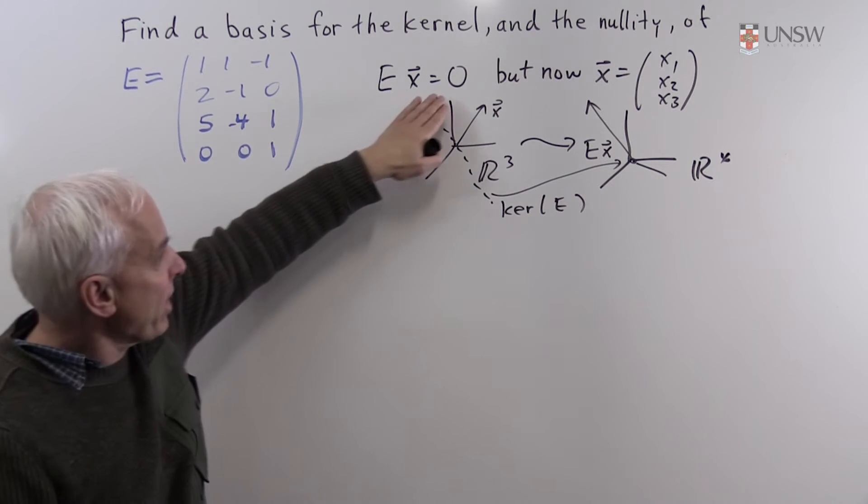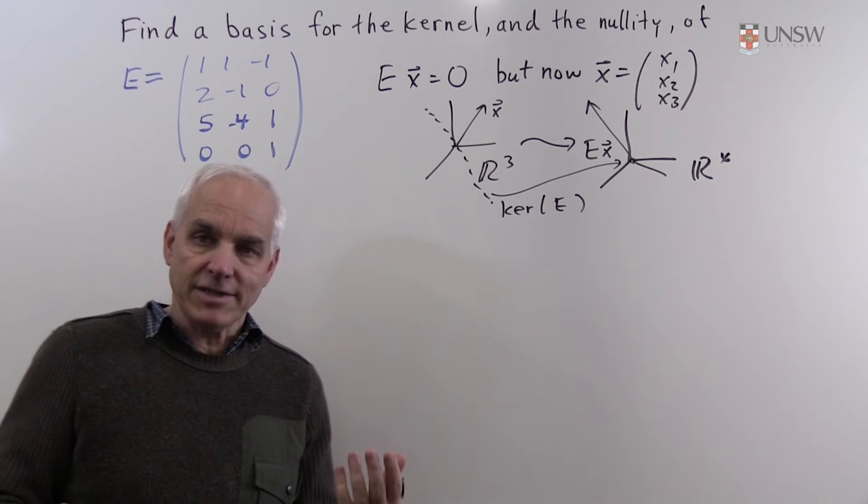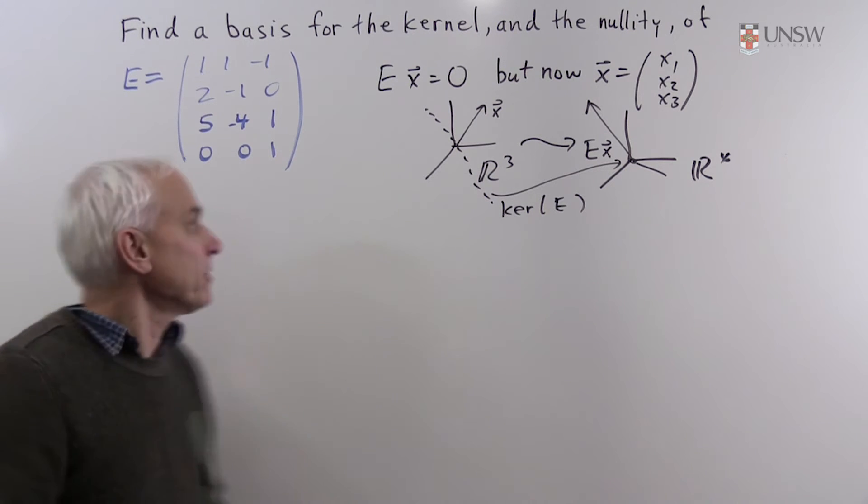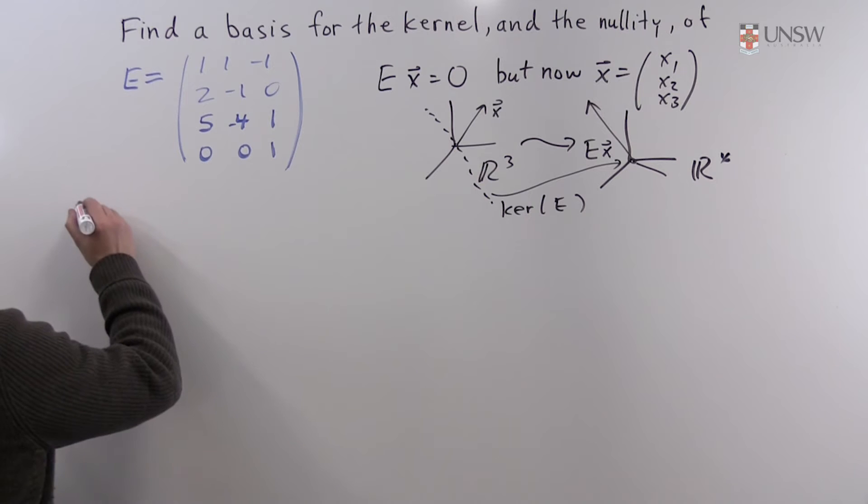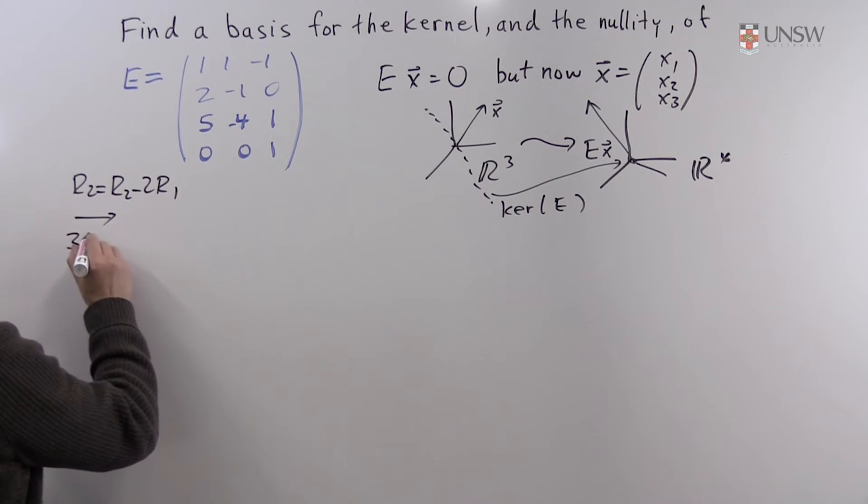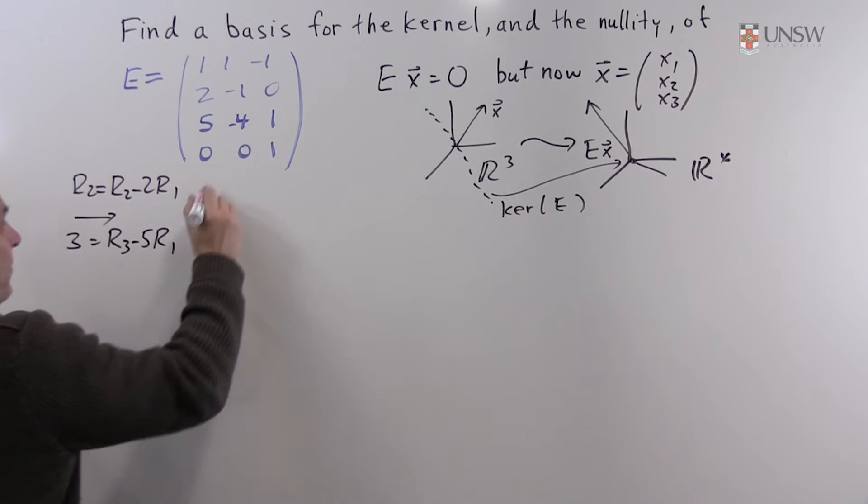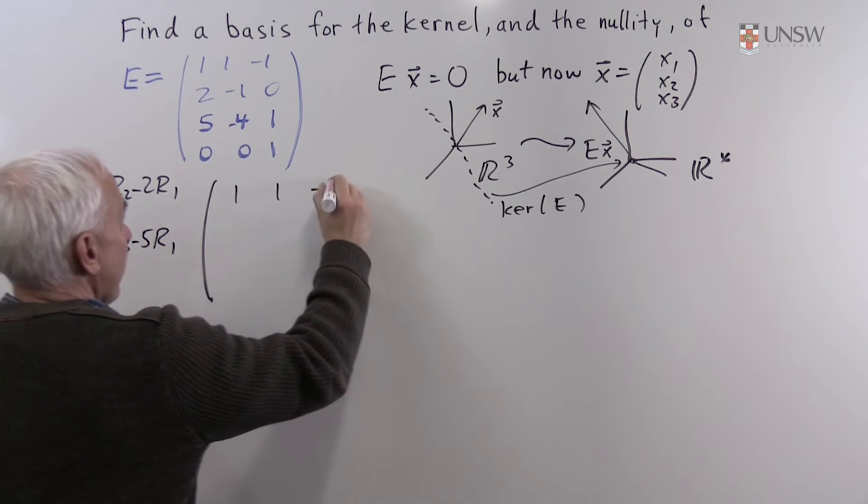So it's this equation which is still the crucial thing that we have to do. We have to row reduce the matrix and solve the system Ex equals 0. So what happens? Well, we're going to row reduce. We'll take row 2 equals row 2 minus 2 times row 1. Row 3 equals row 3 minus 5 times row 1. That will give us 1, 1 minus 1.